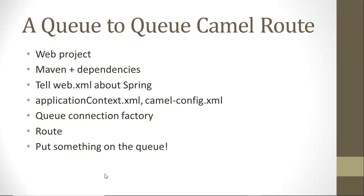A Q2Q Camel route is a route where you can take a message, enhance it, filter it, and route it. What do we need for a Q2Q Camel route? Some type of web project in an IDE, Maven for dependencies, we'll need to configure Spring to tell it about this route, and then camel.config.xml is an important file — that's an XML file where we can set up a route from one source to one destination.